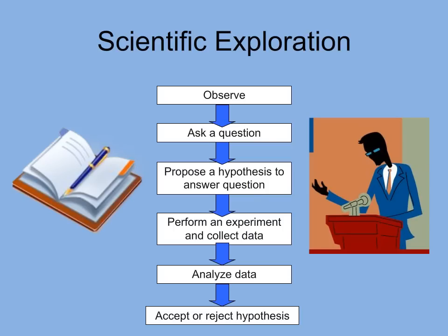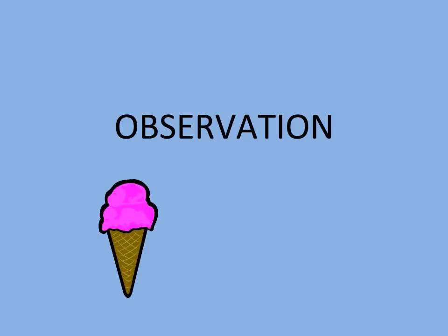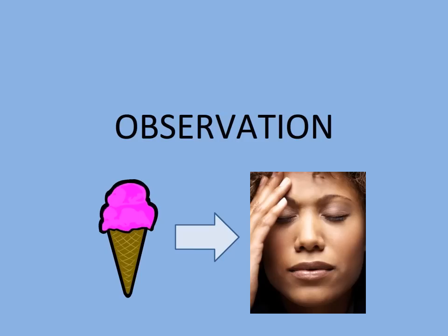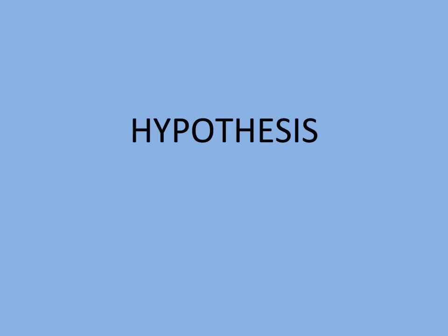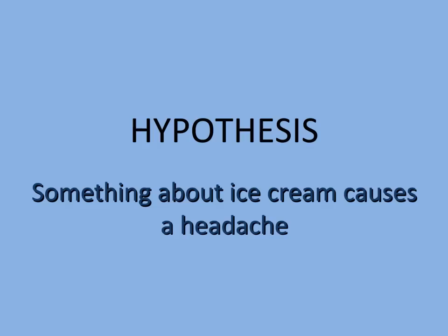Let's go through these steps with an example. You eat an ice cream cone rather quickly and observe that you get a splitting headache. Why did you get the headache? Let's answer that question to form our hypothesis. There must be something about ice cream that causes a headache. But is that a good hypothesis? Let's check.